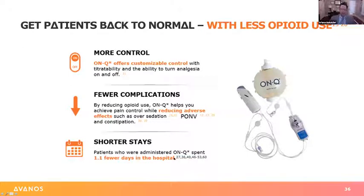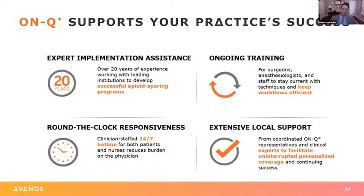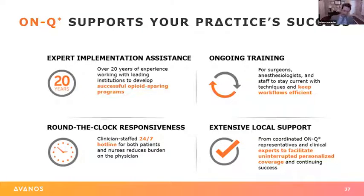We've shown that in the majority of procedures, we've reduced length of stay by at least a day and have been able to take a whole bunch of our procedures to the surgery center, getting patients out day of surgery. The ESPs have been really profound and very powerful in our clinical setting. OnCue also supports your practice's success by helping with implementation of ERAS protocols, block programs, and acute pain service. They provide ongoing training like this for anesthesiologists, staff, and surgeons, have a 24-hour hotline staffed by clinicians, and offer local support with reps in your area.